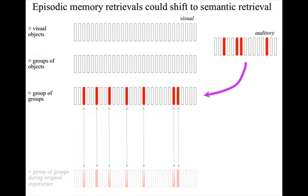But note that the information content of the event memory is recorded at the time of the event in a range of cortical areas and it doesn't move. There's no consolidation of the information in some different location over time. The only thing that moves is the location of the pointers to that information, from the hippocampal system to areas supporting semantic memory retrievals, which are probably in the left inferior frontal gyrus.